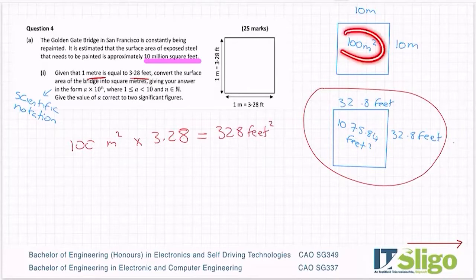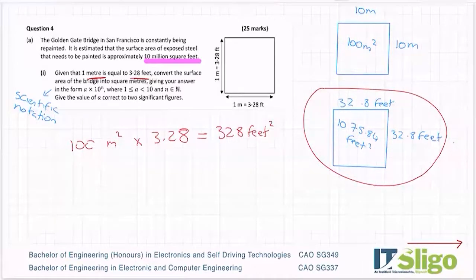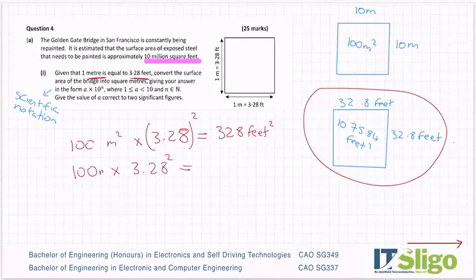And lo and behold, when you multiply that, you get 328 feet squared. So how, when I converted that to metres, did I not get 1075.84? And the reason is because it's feet by feet, it's squared. Your conversion when you're dealing with squared has also to be squared. So you must use 3.28 squared to change metres squared to feet squared.